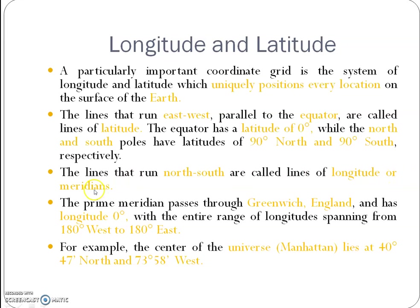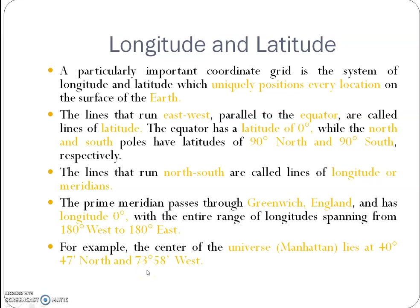The prime meridian passes through Greenwich, England and has a longitude of 0 degrees, with the entire range of longitude spanning from 180 degrees west to 180 degrees east. For example, the center of Manhattan lies at approximately 40 degrees north and 73 degrees 58 minutes west.